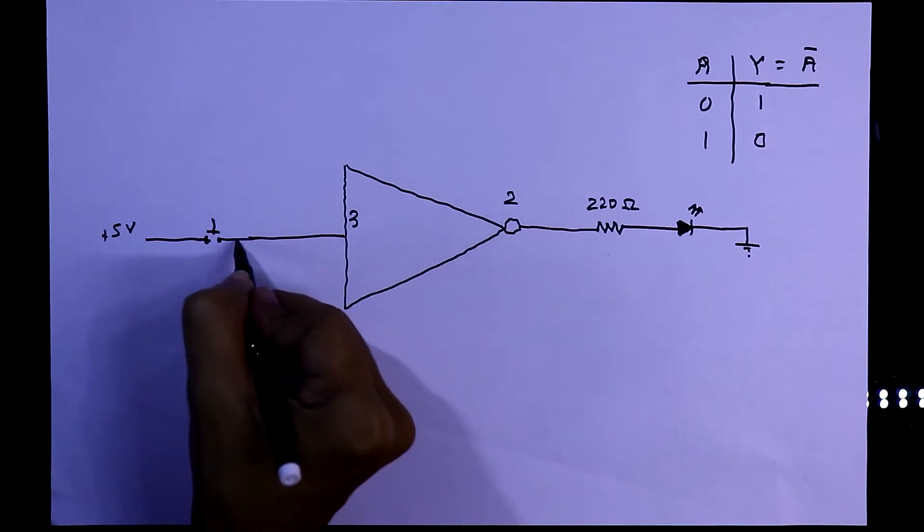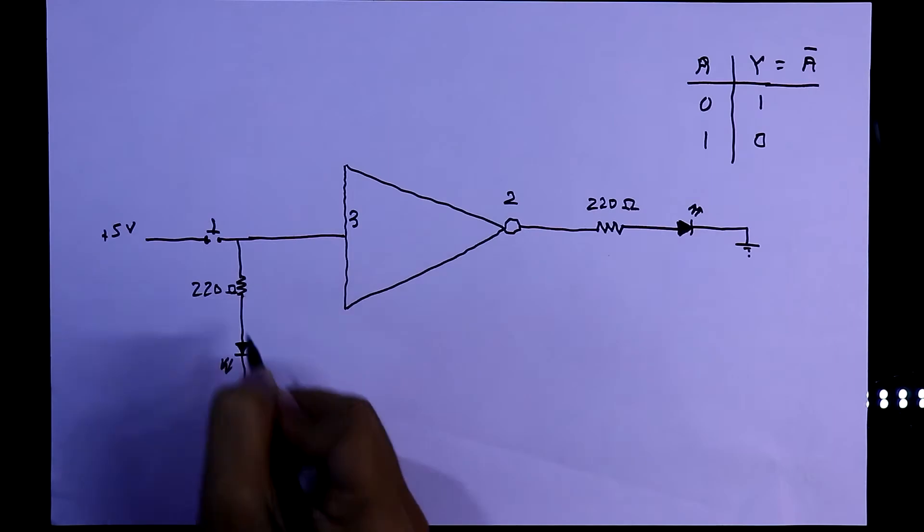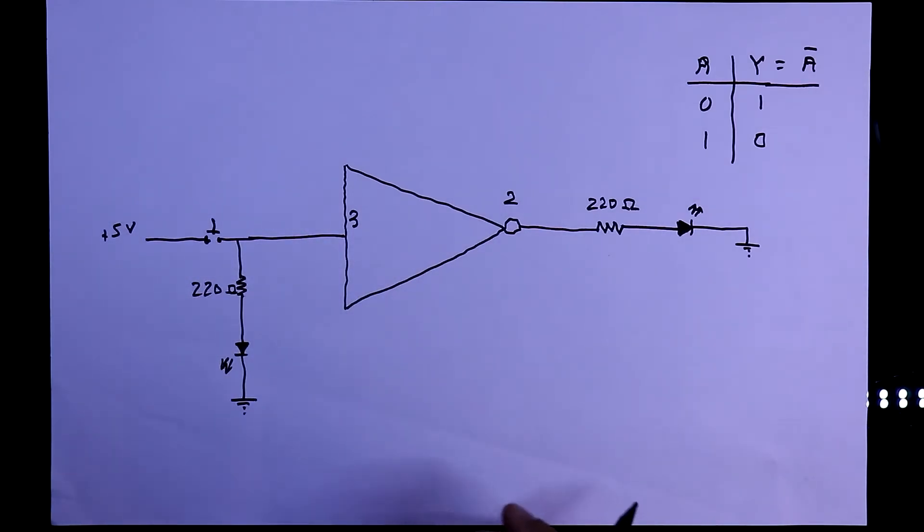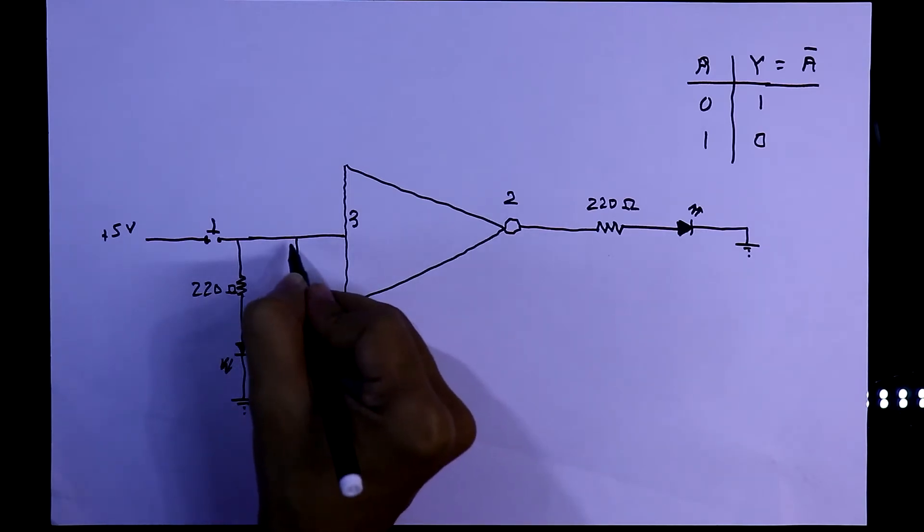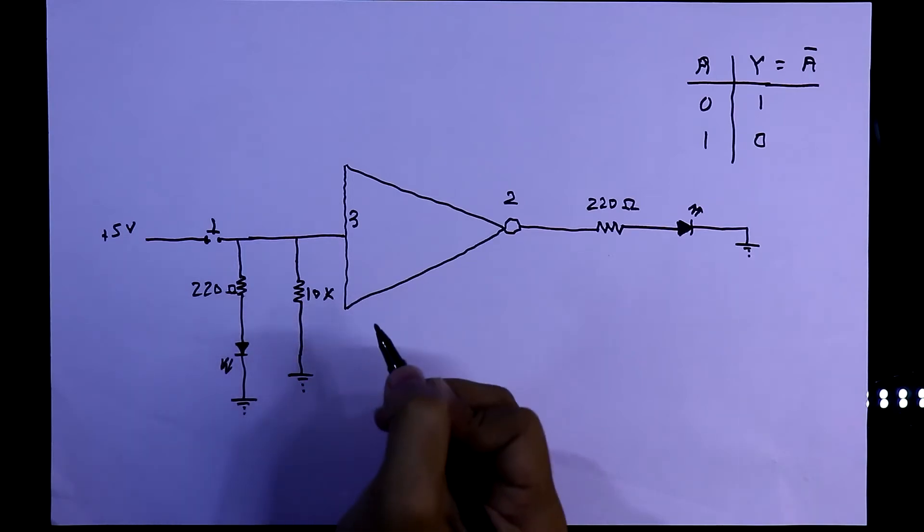And to see the input, we also use a resistor and an LED. Theoretically, this circuit is correct, but practically, we have to use pull-down resistor and it is connected to input. The value of the pull-down resistor will be 10 kilo ohms.